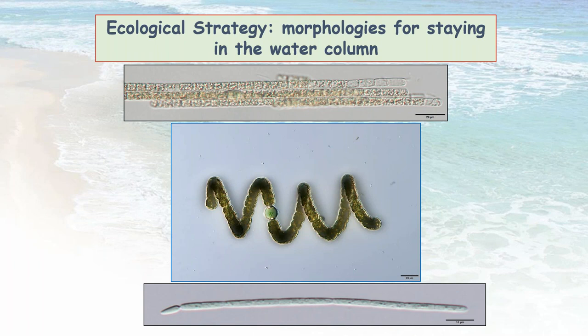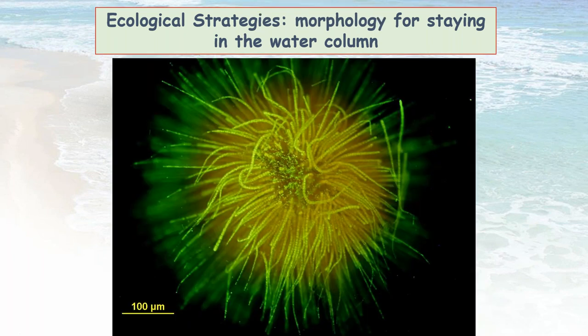This is Gloeotrichia. This one has all these filaments with the bases tucked in together. I call this a pin cushion. Actually, this organism was boiled for 15 minutes. Chlorophyll is the orangish-yellow color. The green is actually cells that are dead, lit up with a DNA stain. But it just goes to show you that these colonies are not only designed to stay up in the water column, but they also keep the integrity of these colonies together. That's a whole other strategy.